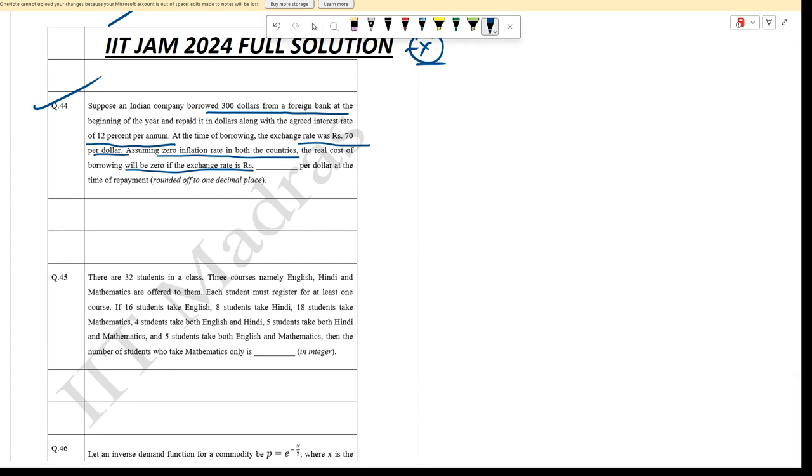Hello students, let's solve IIT JAM 2024 question number 44. Suppose that an Indian economy borrowed 300 dollars from a foreign bank along with agreed interest of 12% per annum. At the time of borrowing, the exchange rate was 70 rupees per dollar, assuming zero inflation rate. Find the real cost of borrowing.